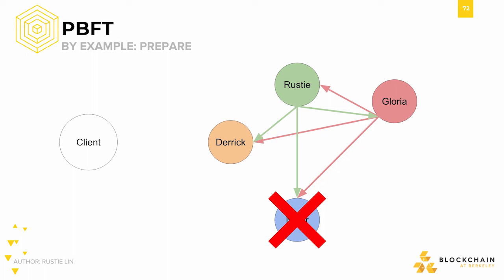A node is considered prepared if it has seen the original request from the primary node, has pre-prepared, and has seen 2F prepare messages that match the pre-prepare, making for 2F plus 1 prepares total. Again, F is the number of Byzantine faults.